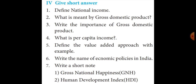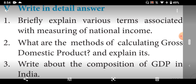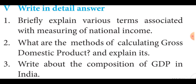These four questions you have to learn. Then Roman numeral 5, write in detail answer. First question: briefly explain various terms associated with measuring of national income. The answer is page number 293 and 294. From there, national income heading, after that various terms associated with measuring of national income — one heading is there. From there, you mark it.